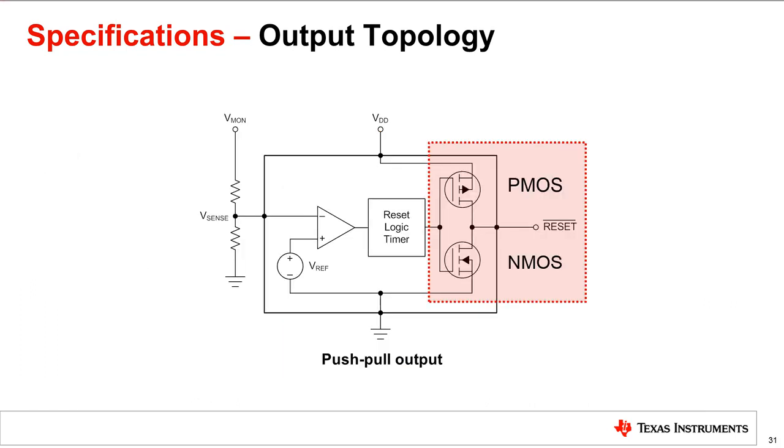For a push-pull supervisor, if the output of the reset logic timer is high due to an under voltage condition, the P MOSFET opens and the N MOSFET closes causing the reset output to pull down to ground. On the other hand, if the output of the reset logic timer is low indicating a normal operating condition, the P MOSFET closes and the N MOSFET opens causing the reset output to pull up to VDD.